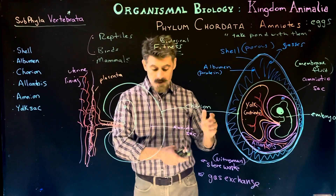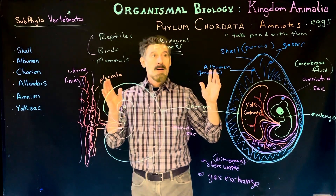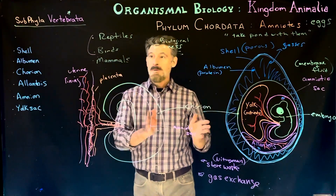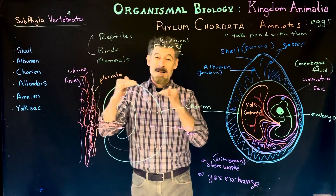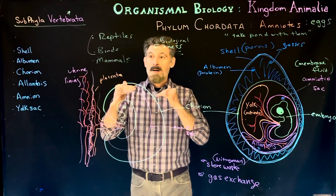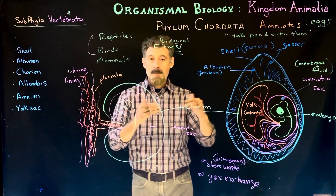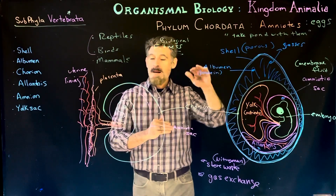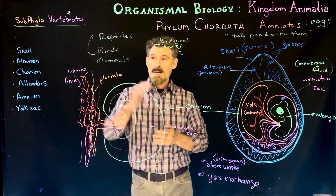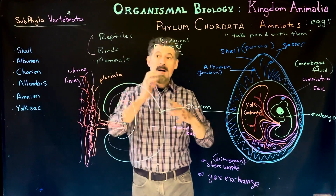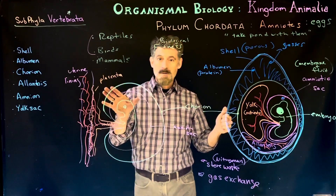Those are the main parts and pieces of the amniotic egg. Next we'll go into reptiles, looking at the groups and the paraphyletic nature of reptiles using cladograms, then we'll talk about birds specifically and their unique traits, and we'll finish with the mammals.